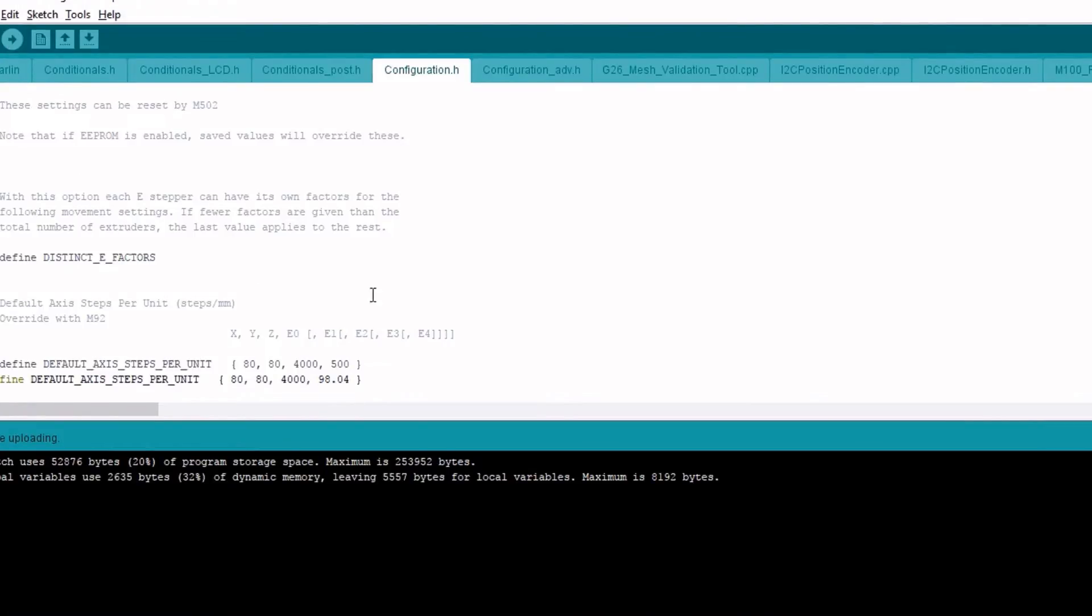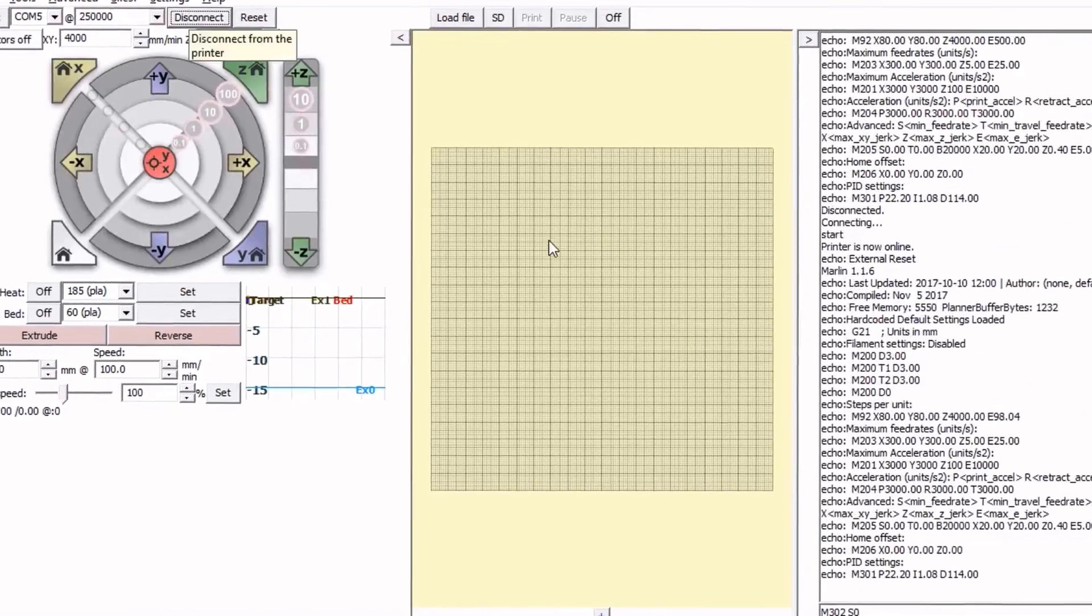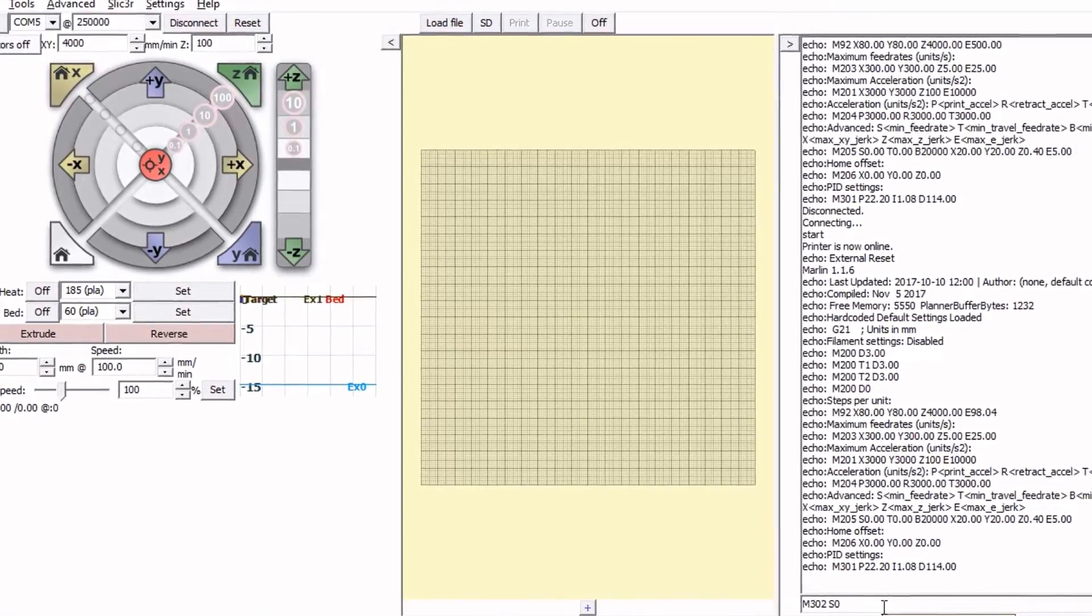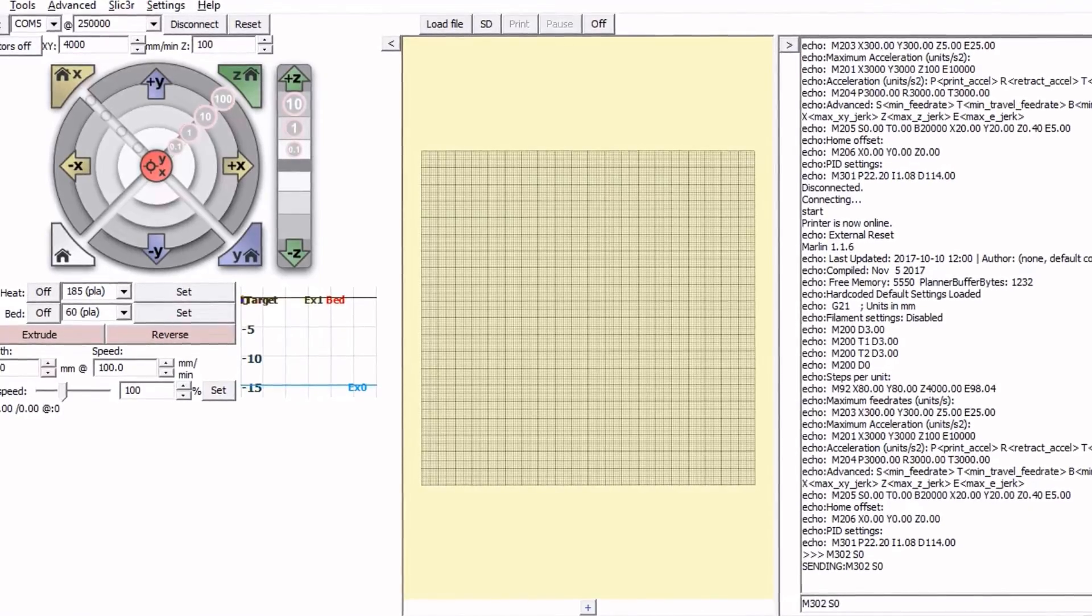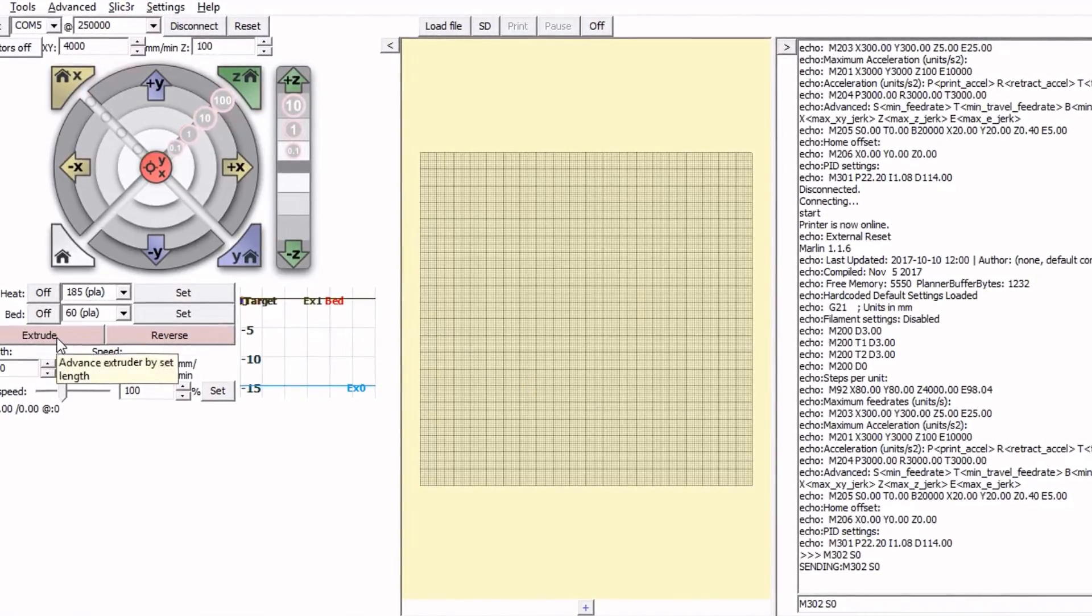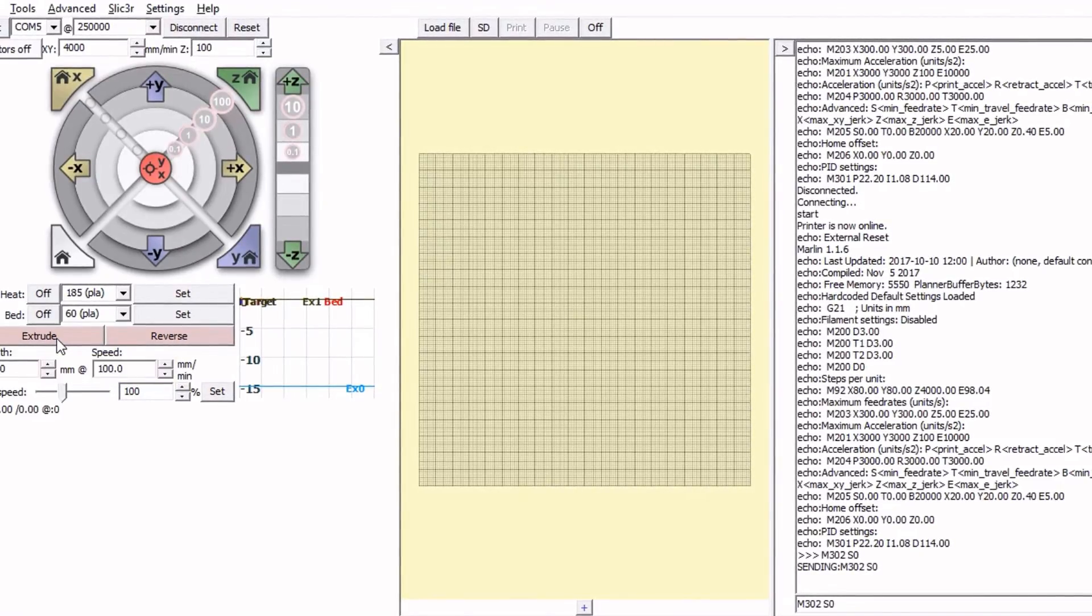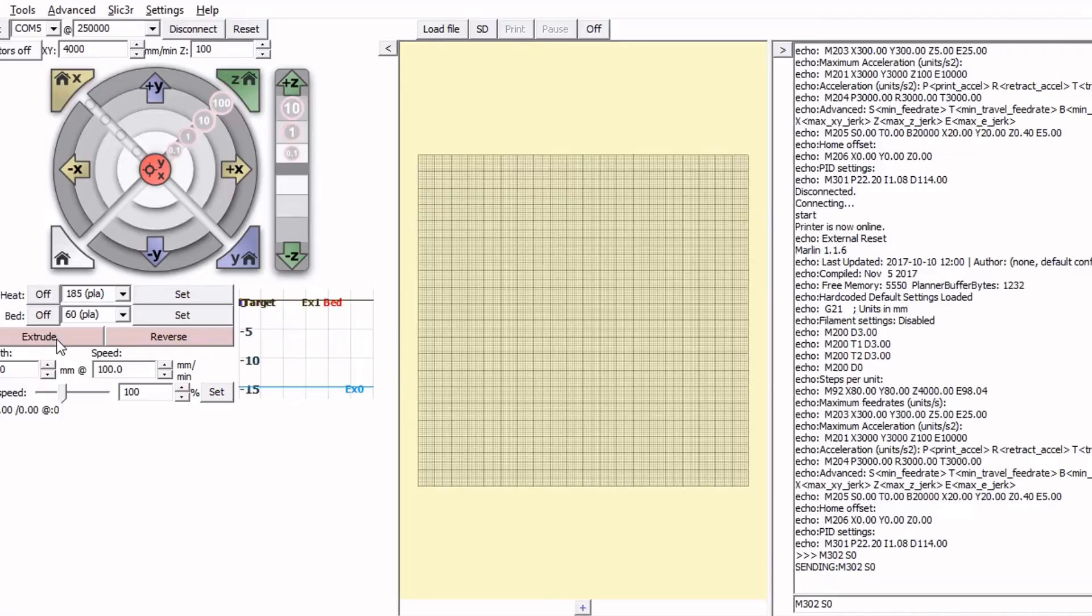Okay, we're going to go over to Pronterface. We're going to reconnect. We're going to put back in the M302S0 so that we're at 0 temperature. And we're going to extrude the same amount. And in a moment, you'll see that it might hopefully be shorter. Okay, we have it set and we're going to extrude 100.